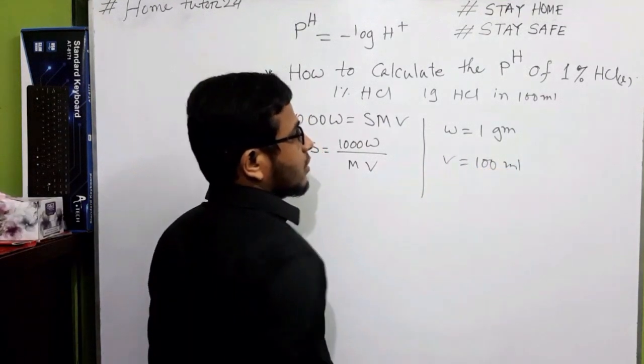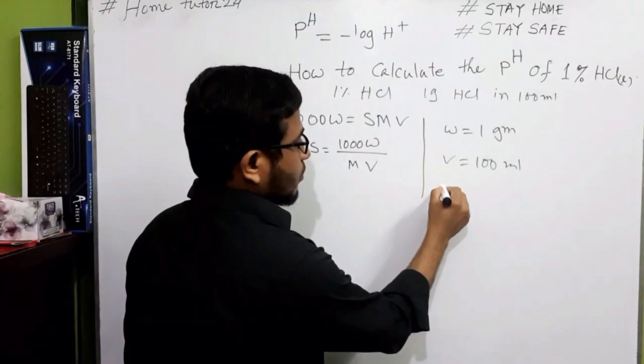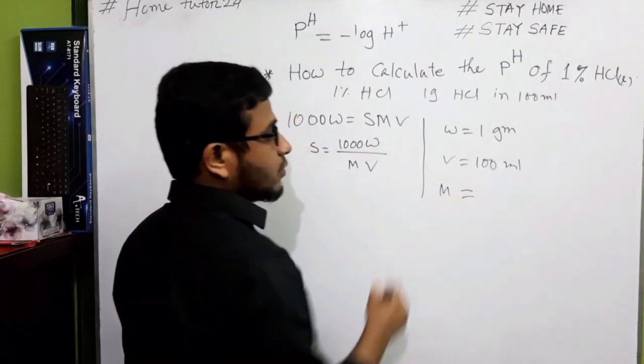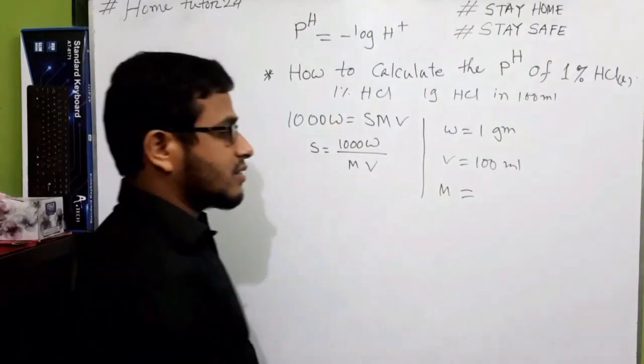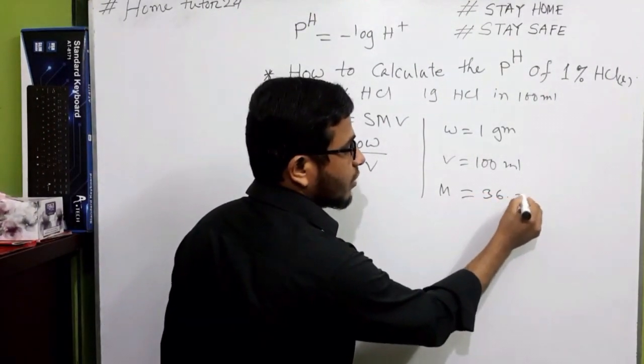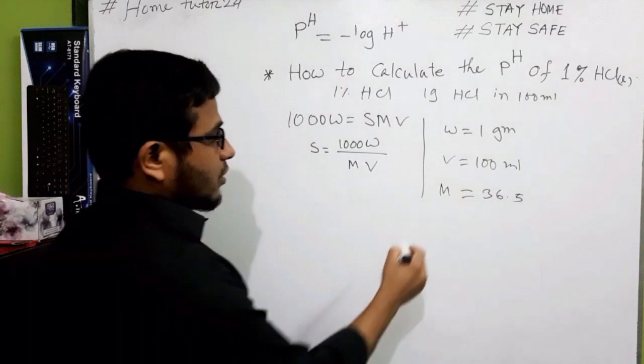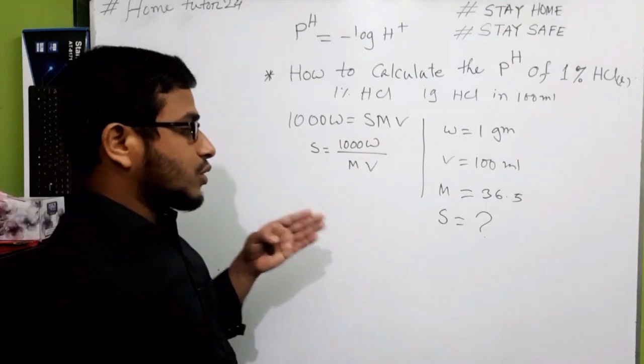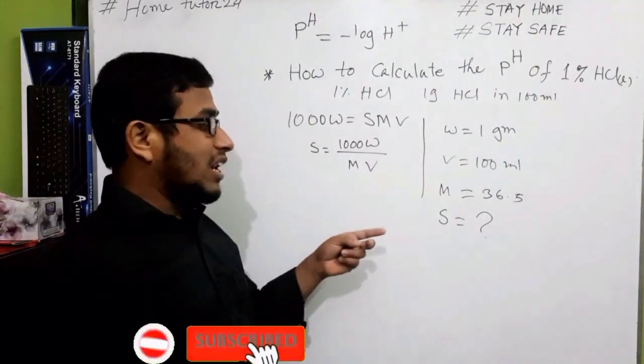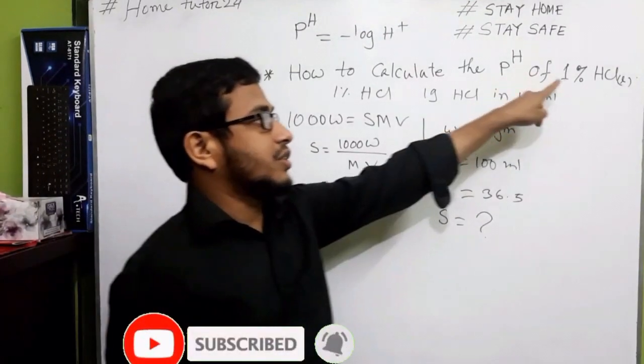M is the molar mass of HCl. We all know that molar mass of HCl is 36.5. The molar concentration S have to calculate. I want to know what is the molar concentration of this solution.